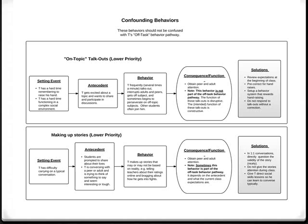There were several behaviors that looked similar to Thomas' off-topic behavior, so I created a few confounding behavior pathways so we could differentiate. On-topic talk-outs, for instance, were different from his off-topic talk-outs. They had a completely different function, so they needed to be treated in a different way — and this is where ABA can be very powerful.